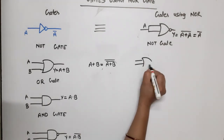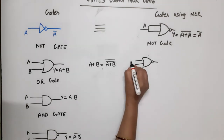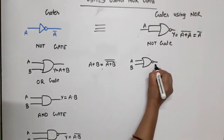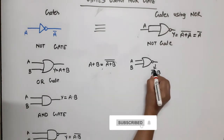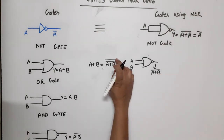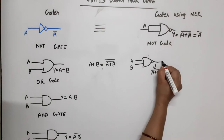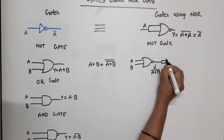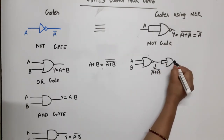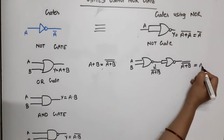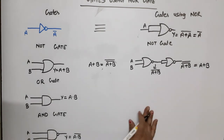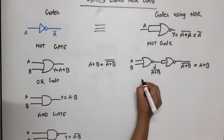First, make one NOR gate with inputs A and B; output is A plus B bar — one complement done. One more complement is required, so use one NOT gate using NOR only. Input is A plus B bar, output is A plus B bar bar, which equals A plus B. This is OR gate using NOR only.